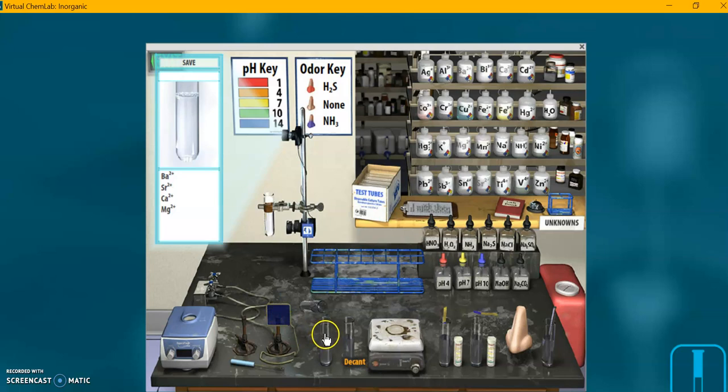This is the decant button. I'm not clicking on them. I'm just mousing over them right now so you can see what these things do. This is the hot plate or heater as they call it.